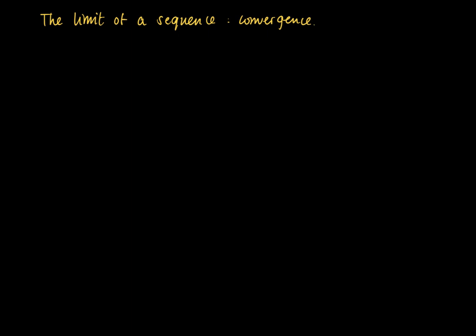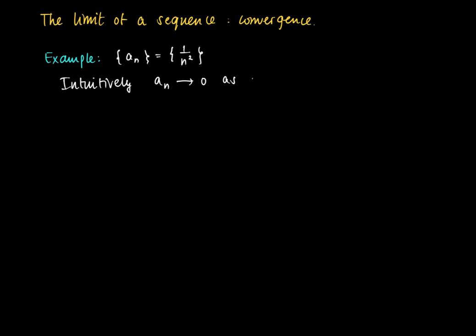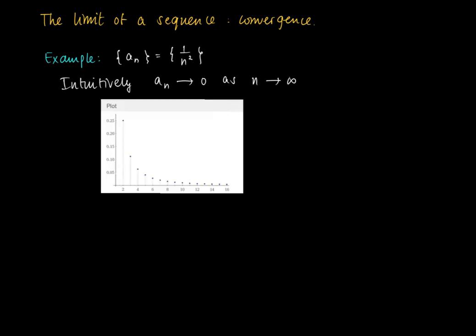In this clip we will focus on the notion of a converging sequence and the limit of a sequence. Consider the sequence a_n = 1/n². By taking large values of n, we see that the values of this sequence tend to zero — for large values of n, a_n is approximately zero.